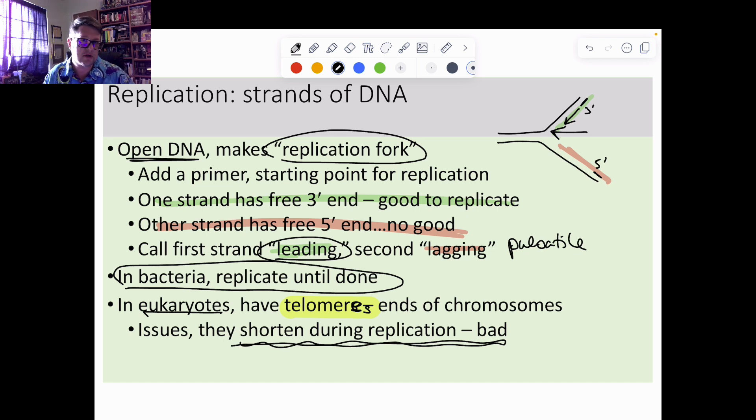Depending on the researcher, we know that when telomeres get too short, the result is the cell stops replicating. We think it's enough to convince the cell that there's DNA damage, and when there's DNA damage the cell just says nope, we're not fixing this, and then you get cell death. We think it might also have something to do with aging, but we're not entirely sure because it's really hard to do those experiments.